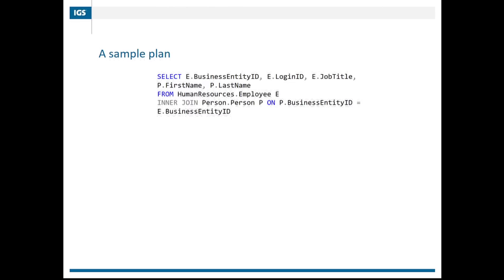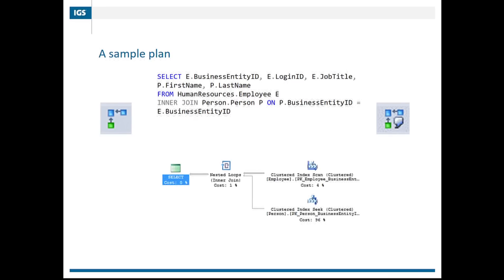Let's look at a real simple sample plan. I have a SELECT statement where I'm selecting some columns from a human resources table, and I want to join that to my person table on a business entity ID - two primary key columns. Reading right to left, starting at the top: I'm doing a clustered index scan from my employee table, which then has to be joined via a nested loop join, and then I follow my nested loop to the next node - a clustered index seek on my person table - and then joining those all together and eventually returning it back to the client.